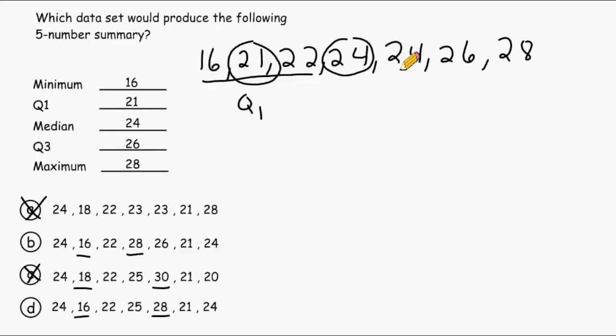And if we take a look at everything after the median and find the middle of those numbers, that would give us the value of Q3. And Q3 is 26. So data set B must be the answer.